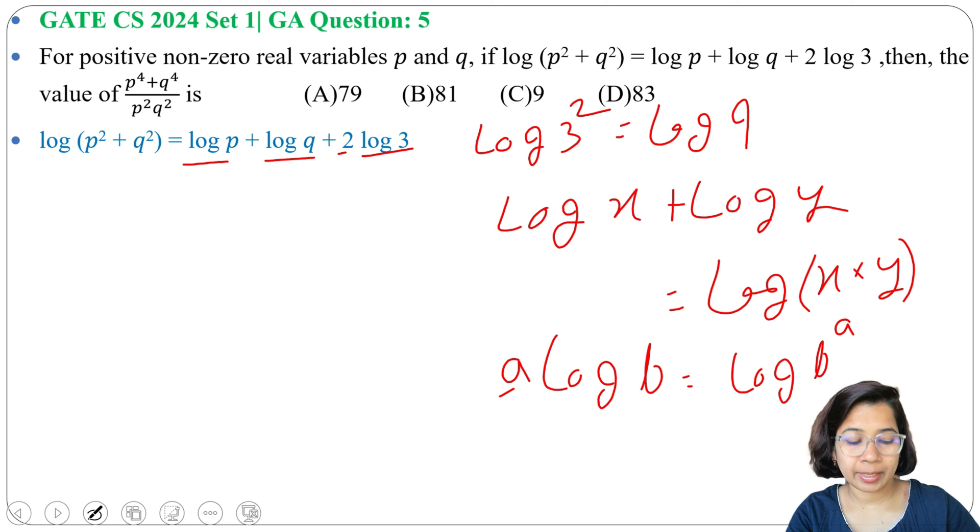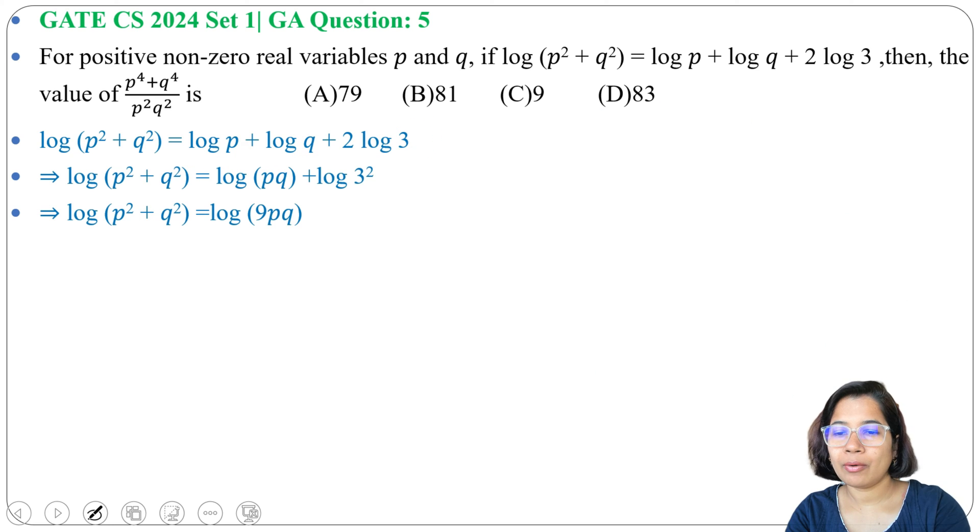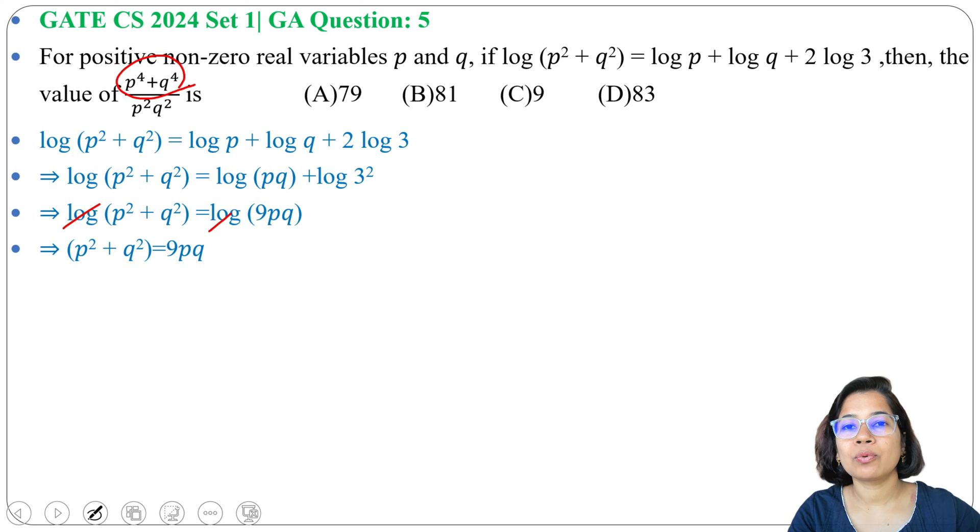Log of 9pq - we can multiply p, q and 3². Now in both sides we have log, so we can cancel log. After cancellation we got p² + q² = 9pq. But in question it is asking about p⁴ and q⁴. So how will we get power 4? Here we have square, so what we will do is square both sides.